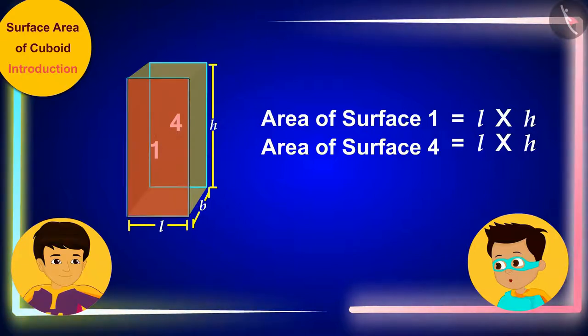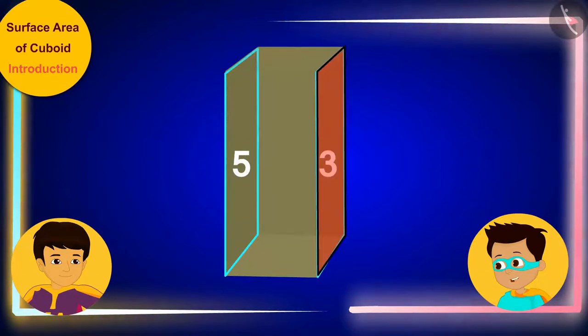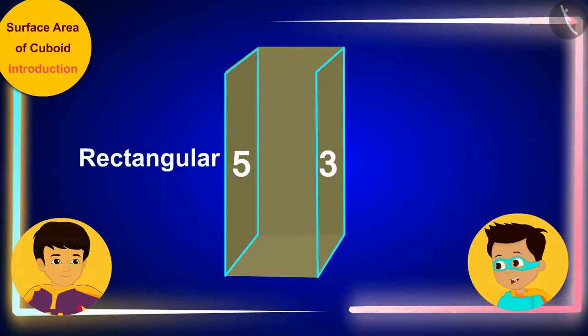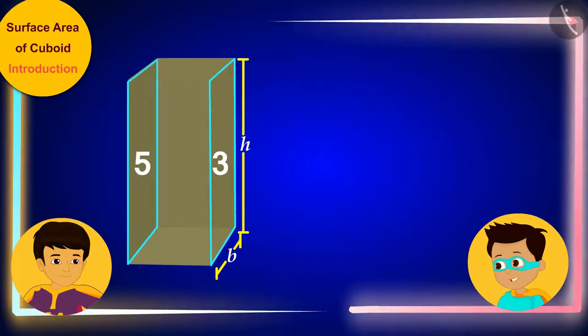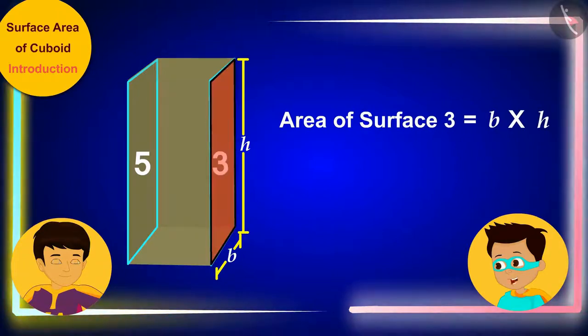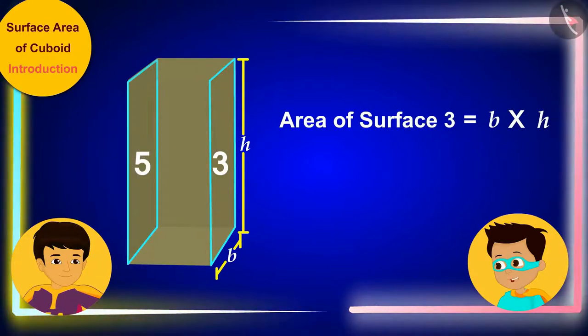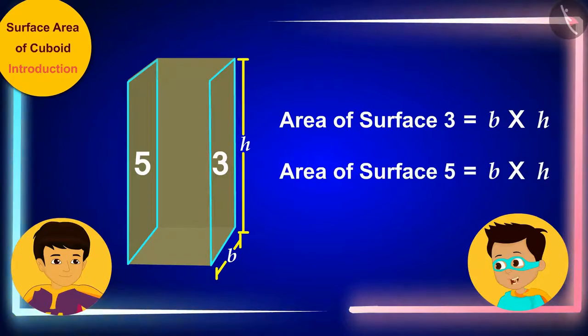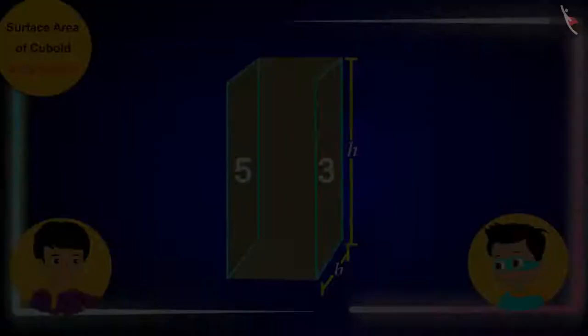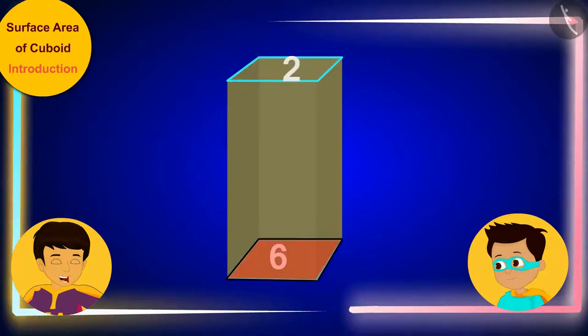Hey, wow Manas! We have found the area of paper required to cover the two surfaces. Now let us also find the paper required to cover surface 3. This surface is also rectangular and has length B and width H. So to cover it we need B times H paper. And look, surfaces 3 and 5 are also congruent. This means we will need B times H of paper to cover surface 5 too, Thomas.